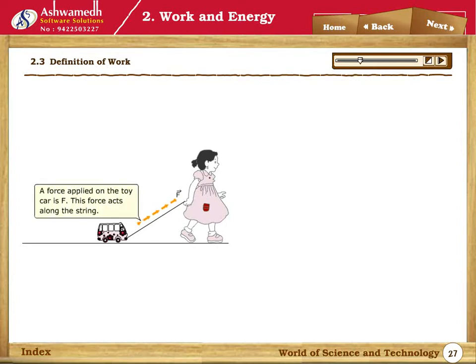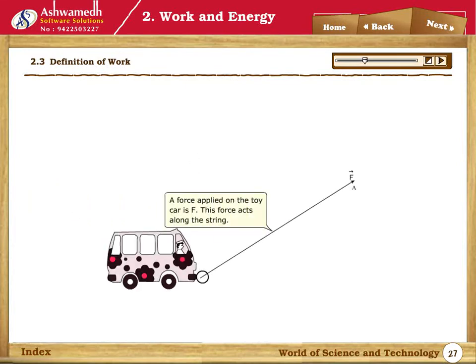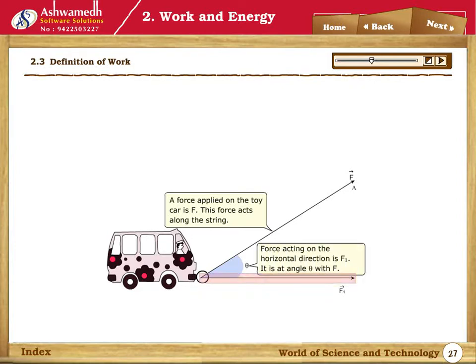Thus, the applied force acts along the string. In this case, the applied force acts at angle theta with the horizontal direction. Thus, force acting on the horizontal direction is F1.